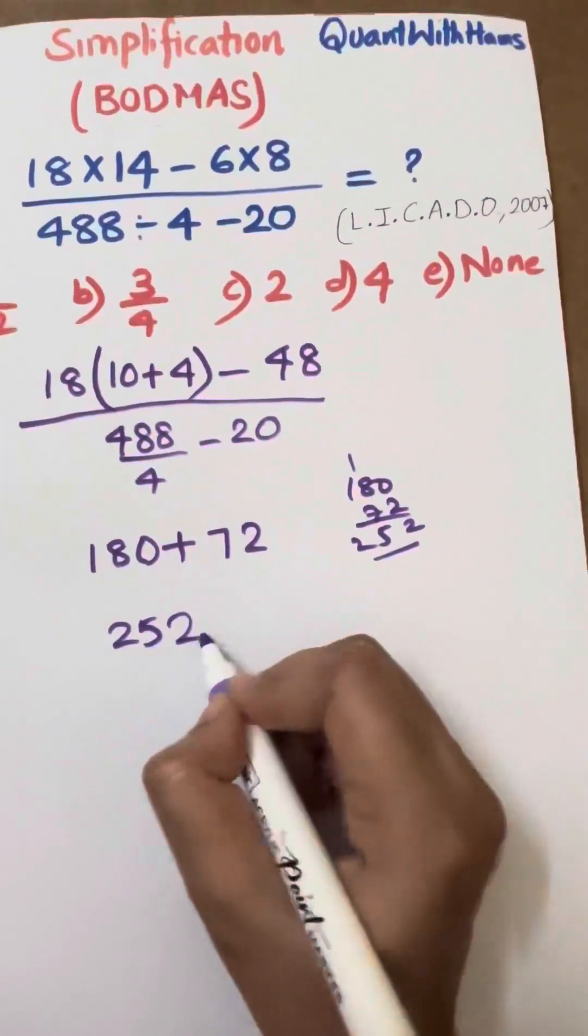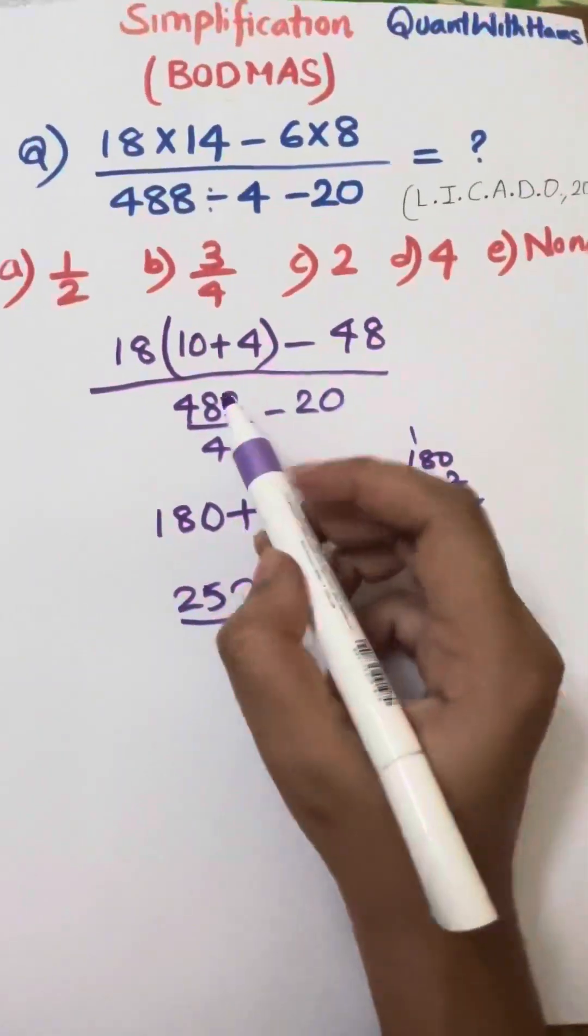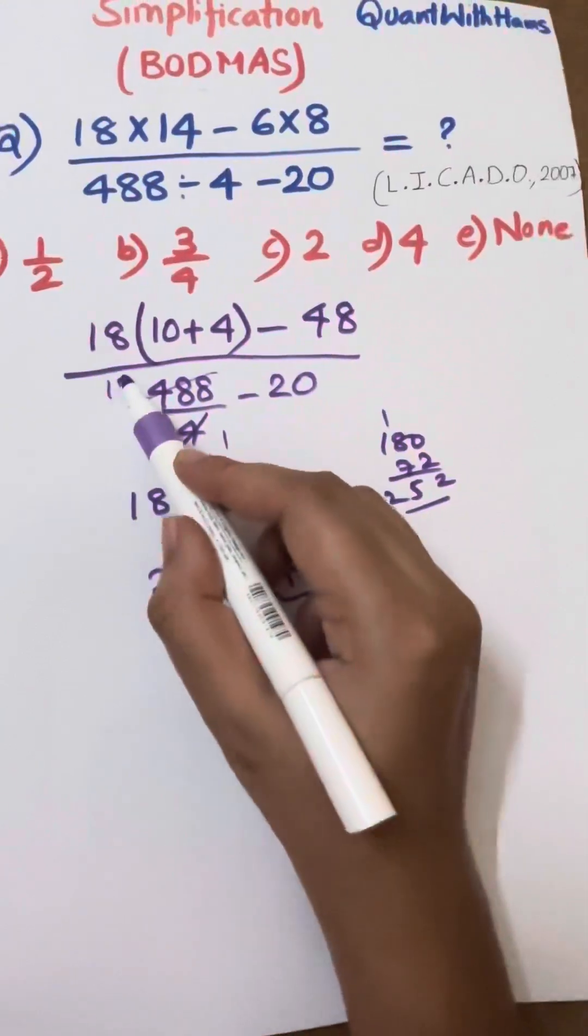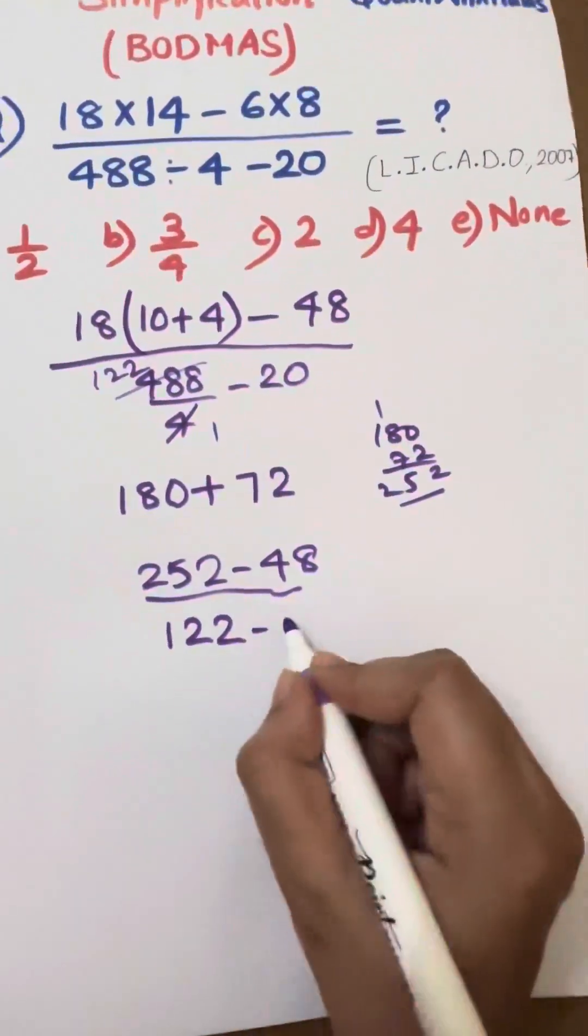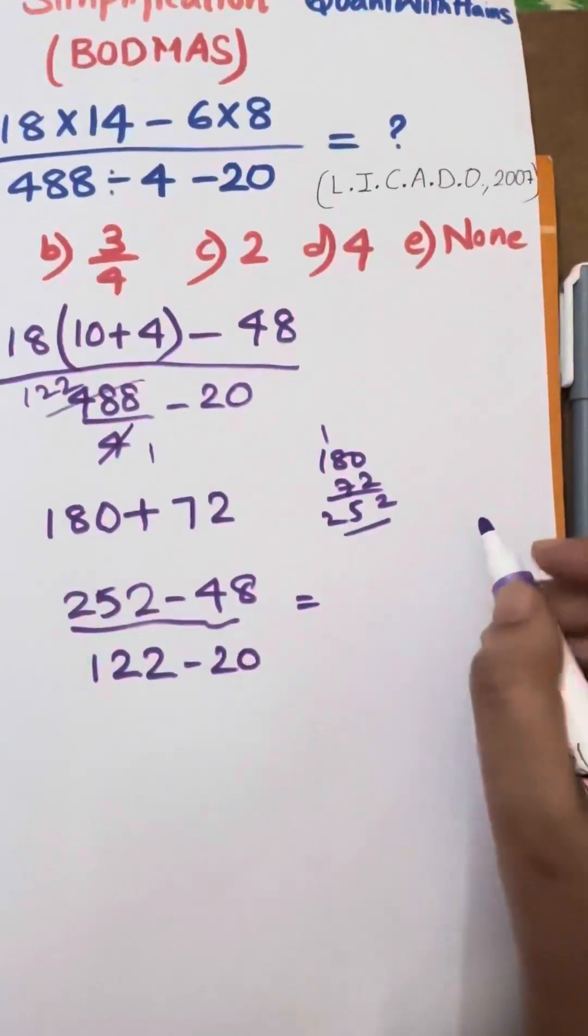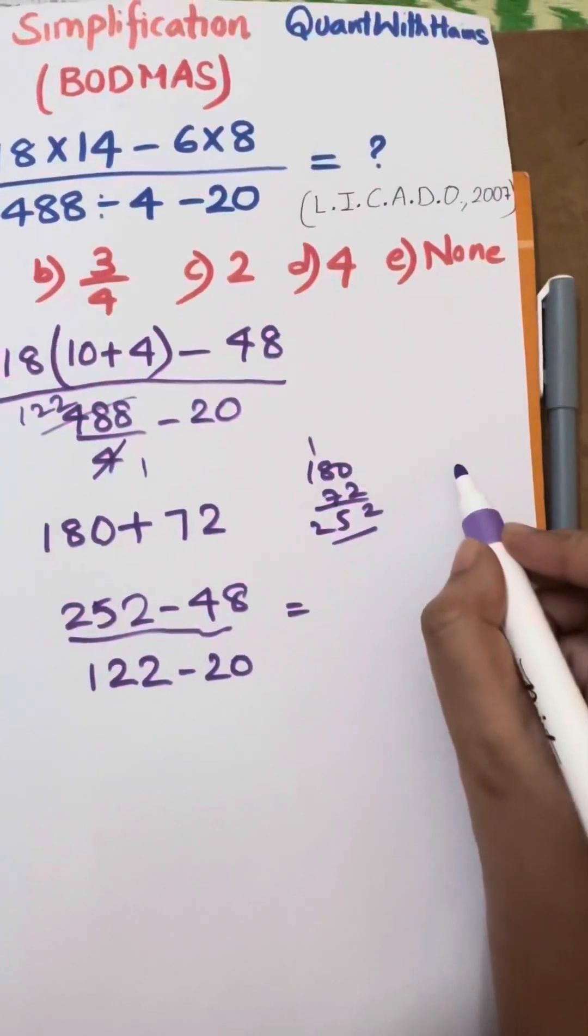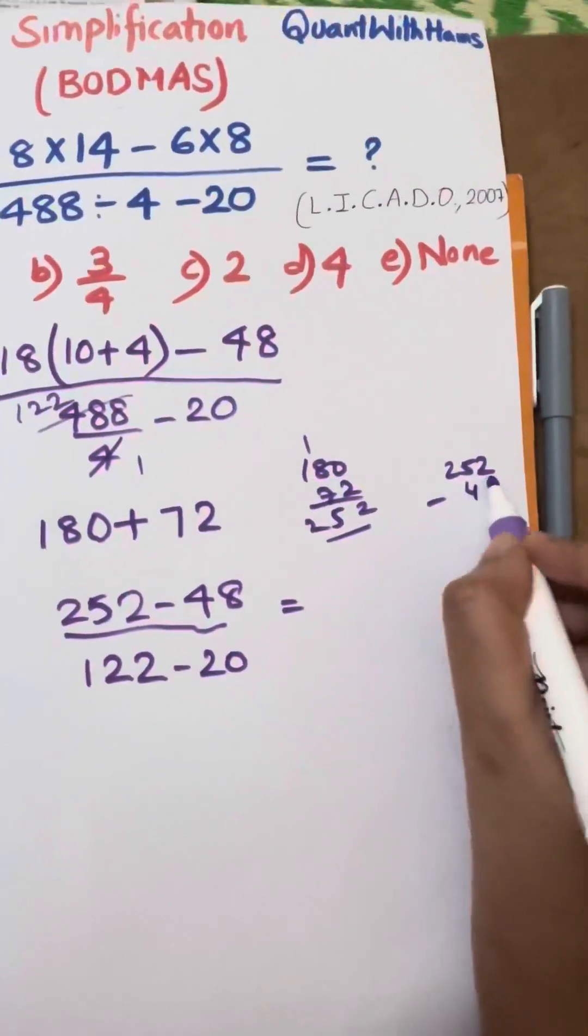252 minus 48. For the denominator, 488 divided by 4 is 122. 122 minus 20. Which gives us 252 minus 48 over 102.